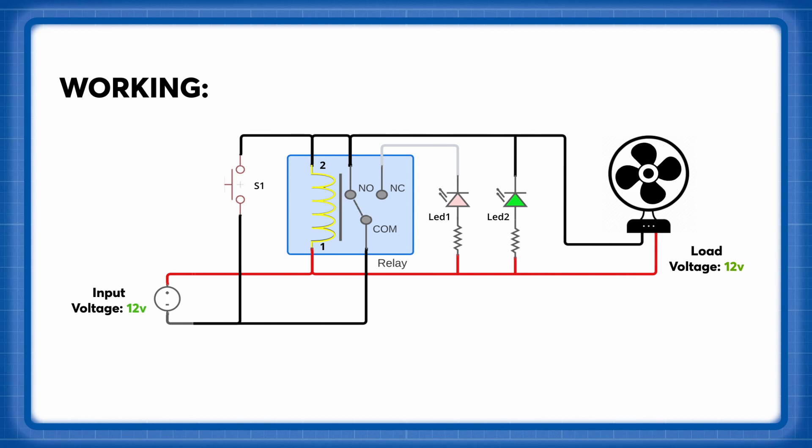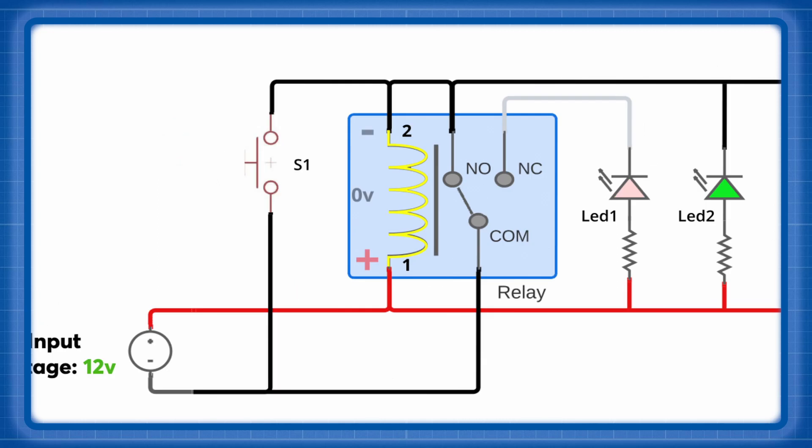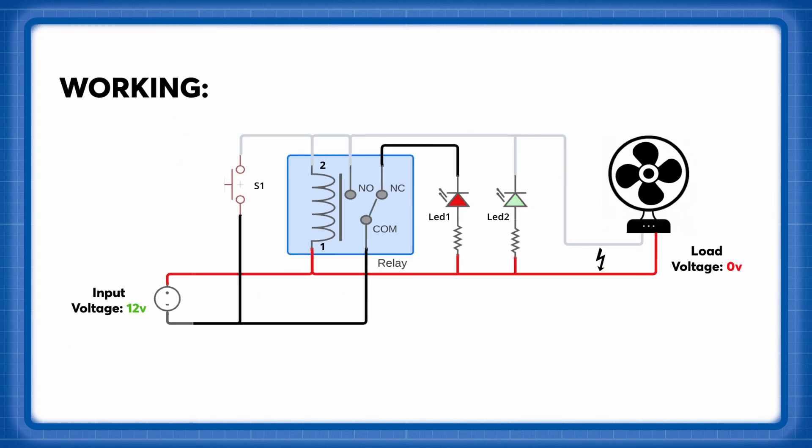The circuit works normally if there is no short circuit at the output. The moment a short circuit occurs, the potential difference at the coil becomes 0, which demagnetizes the coil and the common pin breaks its connection with the normally open pin, which prevents the short circuit.